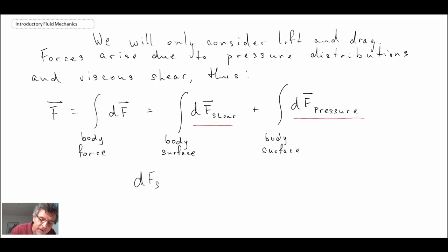dF shear is a vector equal to the shear stress distribution on the object multiplied by the area. For the force due to pressure, you would need to know the pressure distribution around the body and then integrate. In that case, pressure is a scalar, so the area is a vector. Those are the forces that act on bodies.